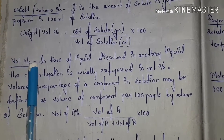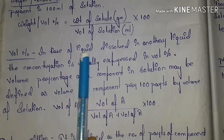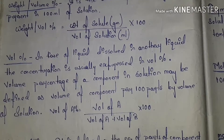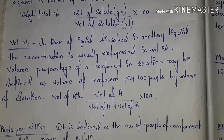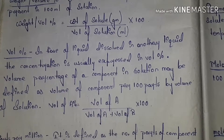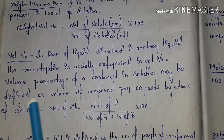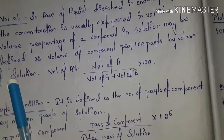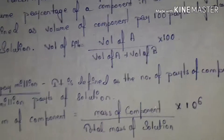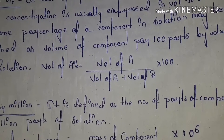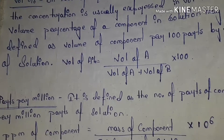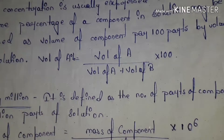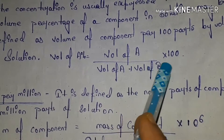Volume percentage compares properties by volume. In case of a liquid dissolved in another liquid, concentration is usually expressed in volume percentage. Volume percentage of a component in solution is defined as the volume of that component per 100 parts by volume of solution. Formula: Volume of A / (Volume of A + Volume of B) × 100.